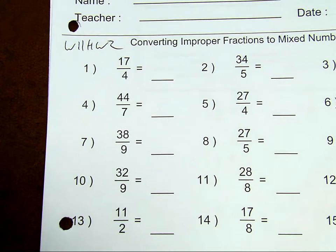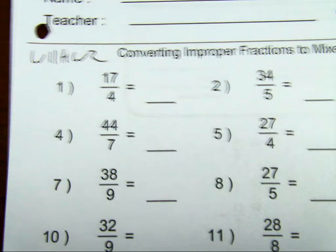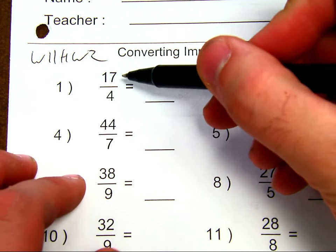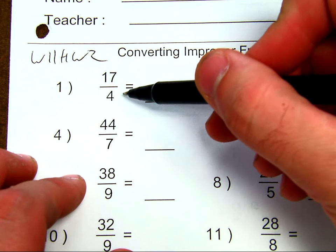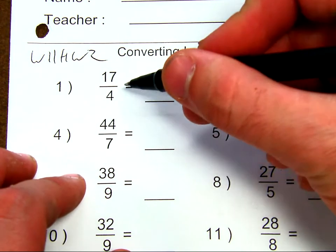So for this first one, number one, let's look at it. Let's start with it. Okay, we have 17 over 4, or 17 divided by 4, or said another way, 17 fourths.